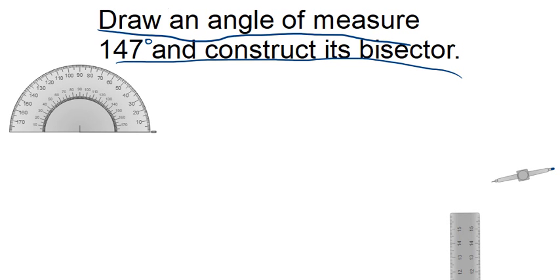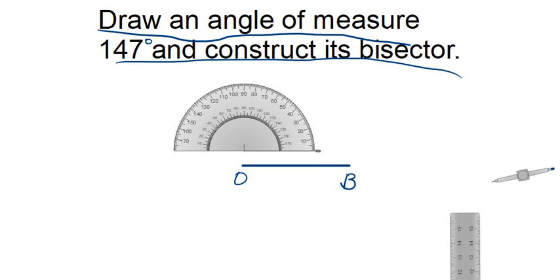Here we will first draw the angle. First of all, take any line segment and I will call it OB. Now, take your compass and put it at point O.